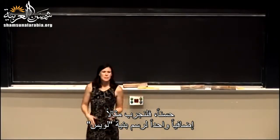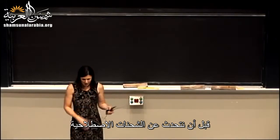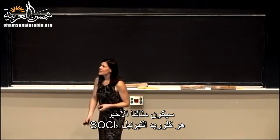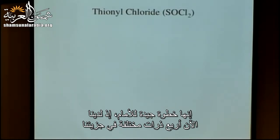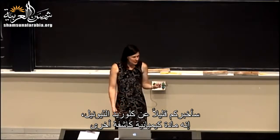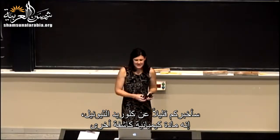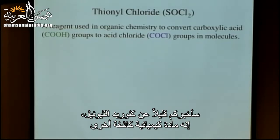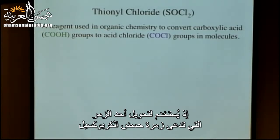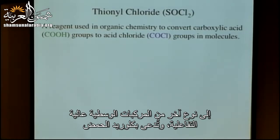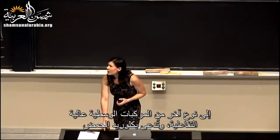Let's try one more example: thionyl chloride, SOCl2. This is a good step forward because now we have four different atoms in our molecule. Thionyl chloride is an organic chemistry reagent used extensively in the pharmaceutical industry. It's used to convert a carboxylic acid group (COOH) into a very reactive intermediate called an acid chloride (C double bond O, Cl).